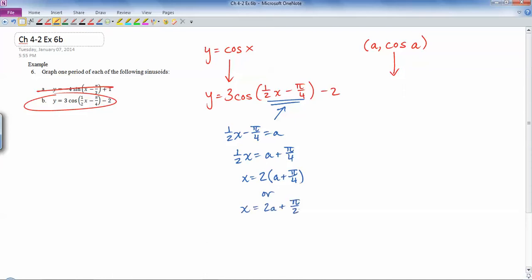...2a plus π/2. I'm going to pick the second one and I'll tell you why later on in the problem. So at this point my new x value is 2a + π/2, and my new y value is the whole thing, it's y equals 3 cos a minus 2.